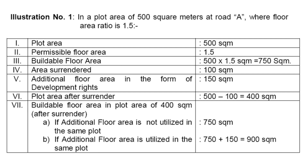Let us see a TDR calculation example. If the plot extent is 500 square meters on road A where the floor area ratio allowable is 1.5, then your permissible floor area is 1.5 times 500, giving a buildable floor area of 750 square meters. If you are surrendering 100 square meters from your plot of 500 square meters as TDR, then for the 100 square meters you surrender, you will get additional FSI of 1.5, which is 150 square meters of additional floor area. Your plot area now becomes 500 minus 100 = 400 square meters.